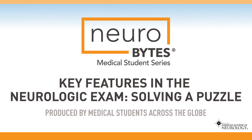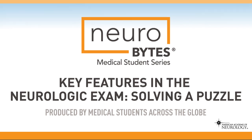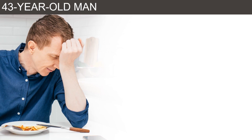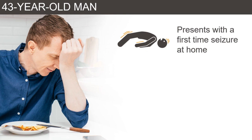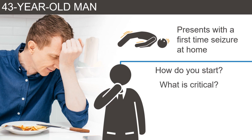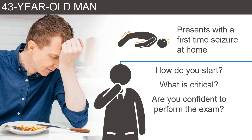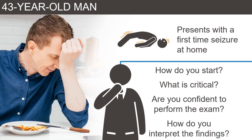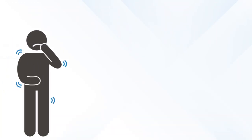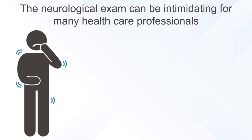You are called to the emergency room to examine a 43-year-old man who suffered a seizure for the first time in his life. You're assigned to collect his medical history and perform a neurological exam. How do you start? What are critical parts of the exam that you should not miss? Do you feel confident performing it? How do you interpret the findings as a life-threatening situation or not? First of all, don't panic.